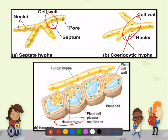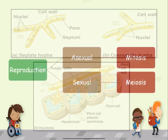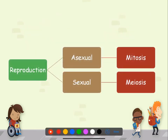Haustoria hyphae are a special type that can attach to plant cells and absorb nutrients from them. Reproduction of fungi is either asexual or sexual. Asexual reproduction is by mitosis, whereas sexual reproduction is by meiosis.